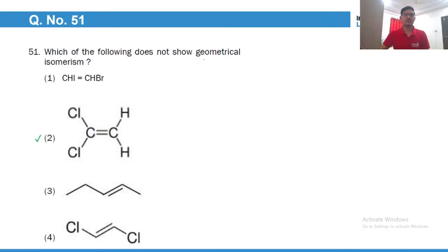Which of the following does not show geometrical isomerism? Of course, this compound because there are two similar groups joined to the doubly bonded carbon atom.